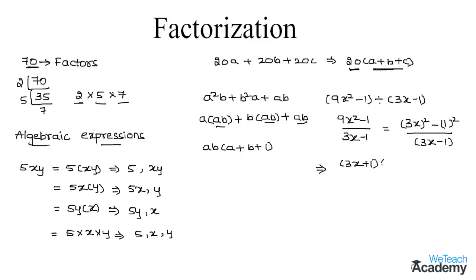Using that identity we can write this as (3x + 1)(3x − 1) divided by (3x − 1). Now cancel out the term (3x − 1) in the numerator and denominator, and thus we get the factor of the expression as (3x + 1). From these examples we notice that factorization helps us write the algebraic expression in simpler form and also helps in simplifying algebraic expressions.